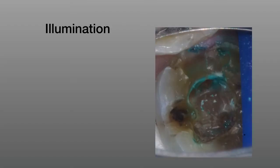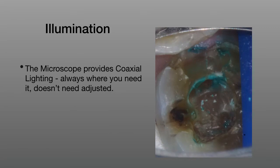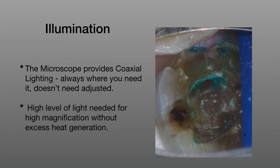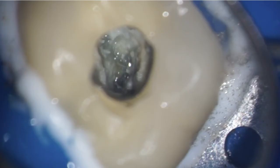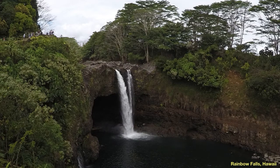Illumination is our second pillar. Illumination is vital to being able to use magnification. The microscope provides coaxial lighting — it's always where you need it and doesn't need adjustment. A high level of light is needed for high magnification without excessive heat generation. This allows us to see things like fractures. At 12.5 times magnification, the depth of field is small, but the lighting gives us a great view of the pulpal floor of the tooth.